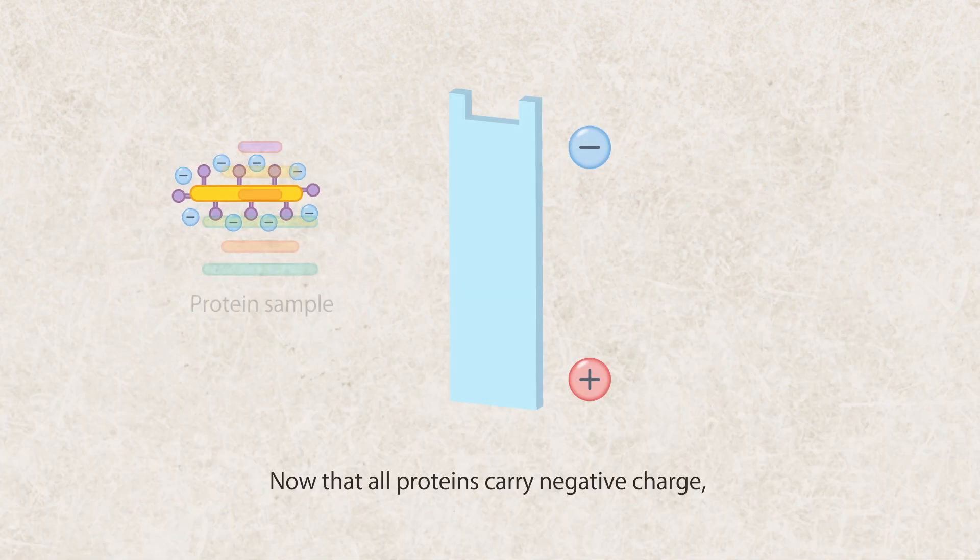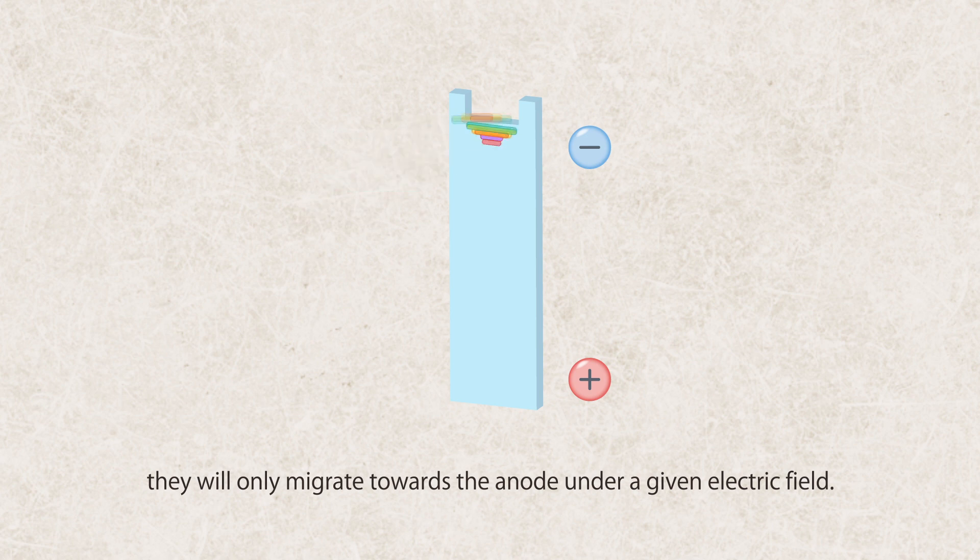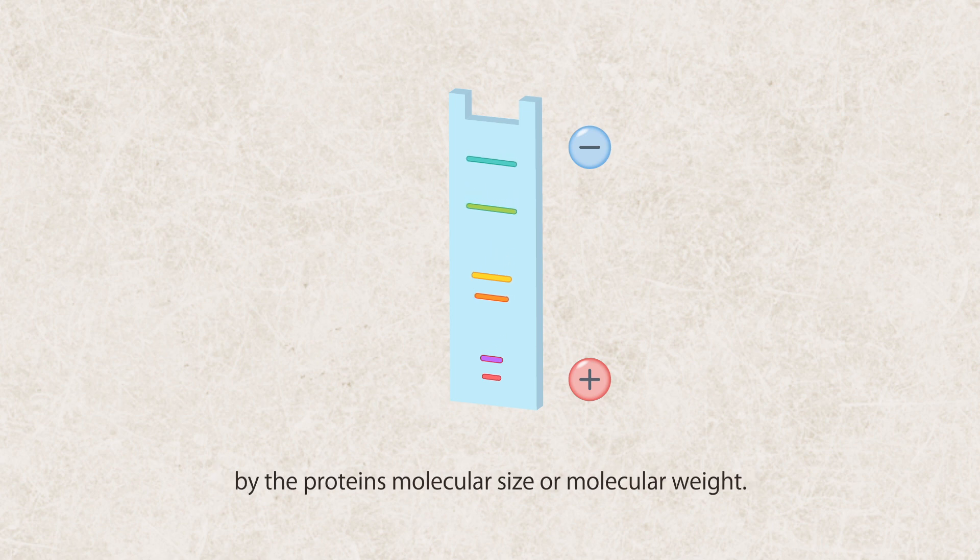Now that all proteins carry negative charge, they will only migrate towards the anode under a given electric field. In addition, the migration rate will only be determined by the protein's molecular size or molecular weight. Larger proteins migrate slower due to more friction while smaller proteins migrate faster due to less friction.